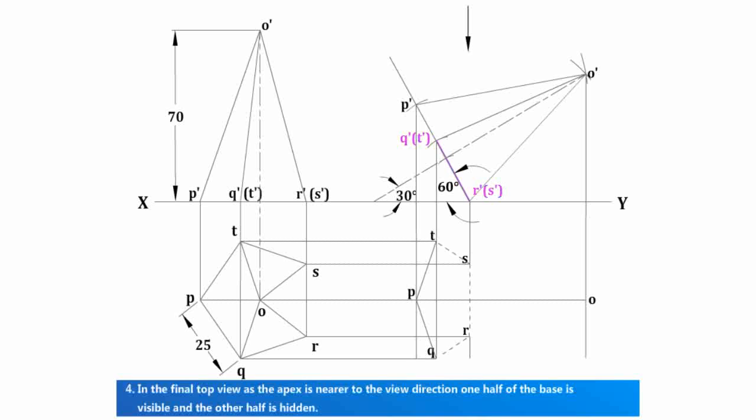In the final top view, as the apex is nearer to the view direction, one half of the base is visible and the other half is hidden.